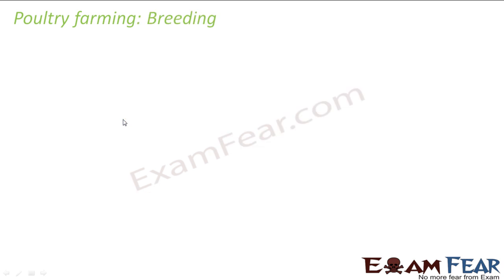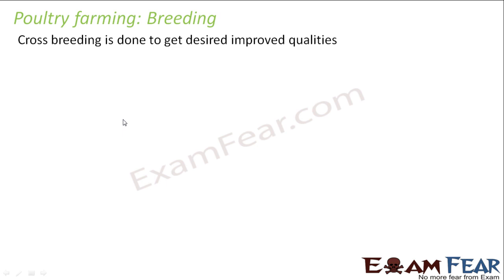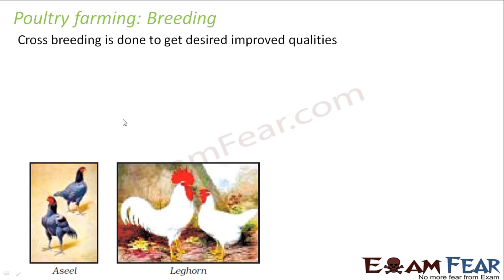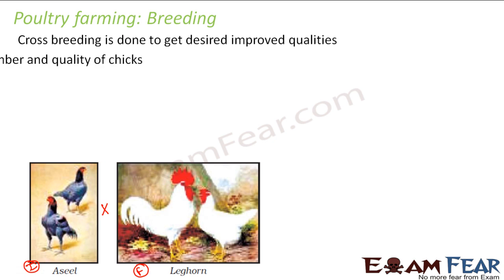In poultry farming, cross breeding is done to get desired improved qualities. For example, the Indian breed Aseel is cross-bred with the foreign breed Leghorn. When cross-bred, the product formed will have some improved qualities.